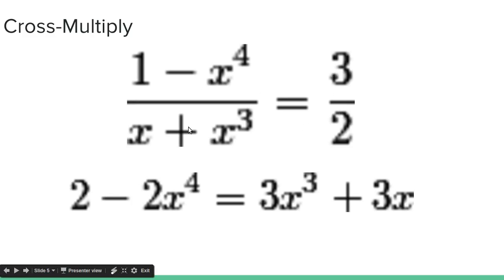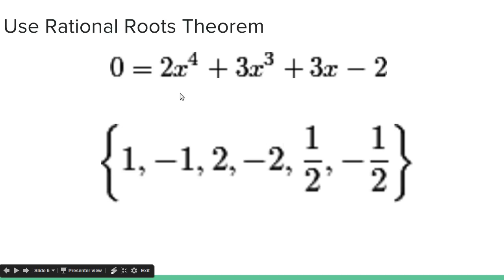And we have a fraction equals a fraction, so we cross multiply. 2 minus 2x to the fourth on the left-hand side, and then 3x cubed plus 3x on the right-hand side. And then we subtract both sides by 2 minus 2x to the fourth. We get 0 equals 2x to the fourth plus 3x cubed plus 3x minus 2.